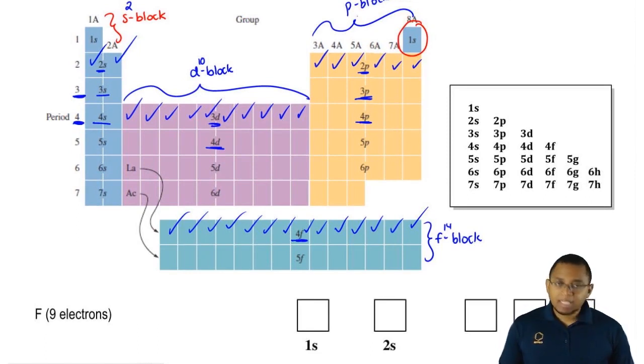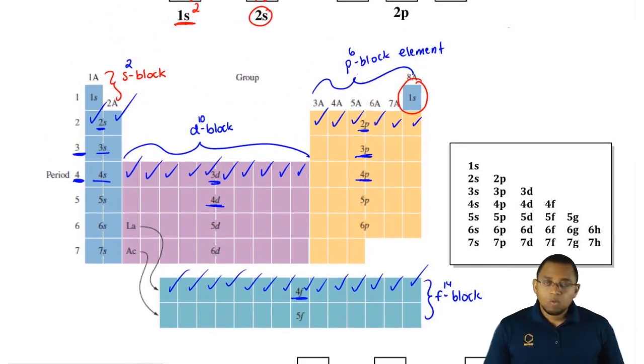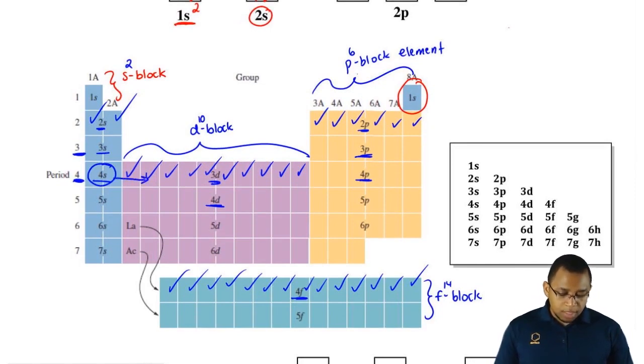If you add those up, that tells you the total number of electrons within shell 3, shell 4. What you should also realize here from this trend is when we go from 4s, we drop down one when we go to the d block, so we drop down to 3d.